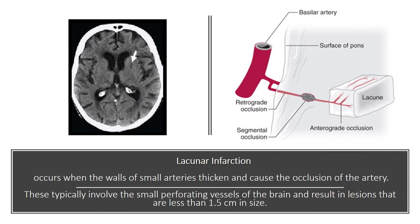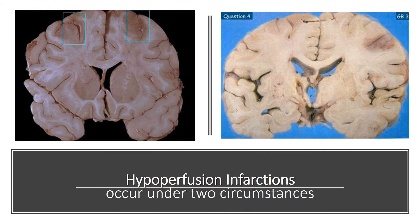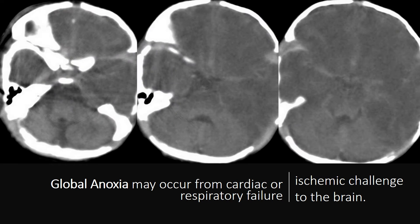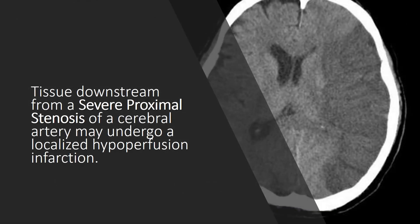A lacunar infarction occurs when the walls of small arteries thicken and cause occlusion of the artery. These typically involve the small perforating vessels of the brain and result in lesions that are less than 1.5 cm in size. Hypoperfusion infarctions occur under two circumstances: global anoxia may occur from cardiac or respiratory failure, and tissue downstream from a severe proximal stenosis of a cerebral artery may undergo a localized hypoperfusion infarction.